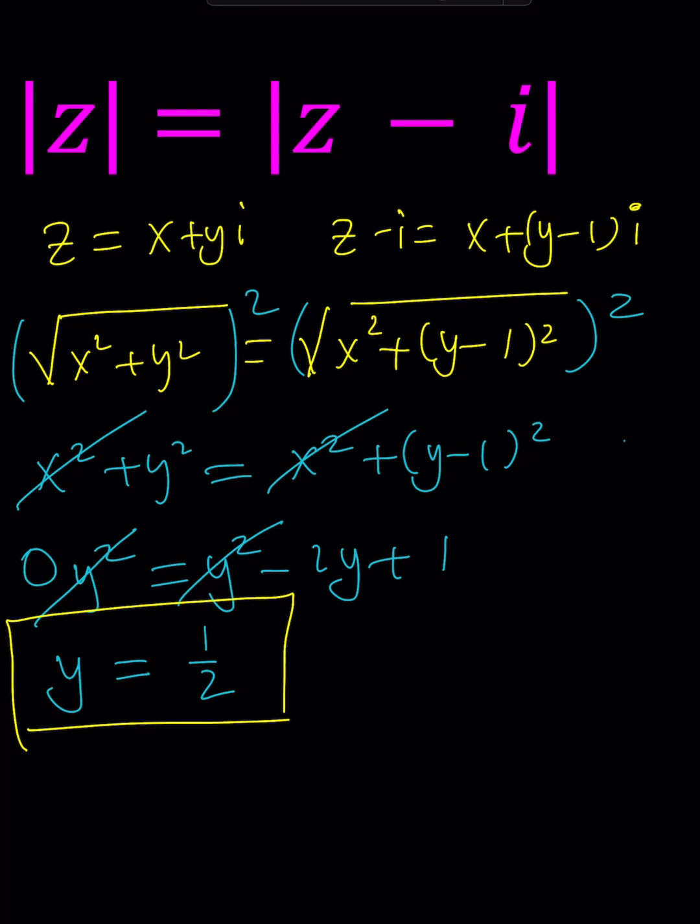Y equals 1 half means X can be anything. In other words, the solution would be any complex number with an imaginary part of 1 half. And that would basically indicate a horizontal line that passes through 1 half on the complex plane.